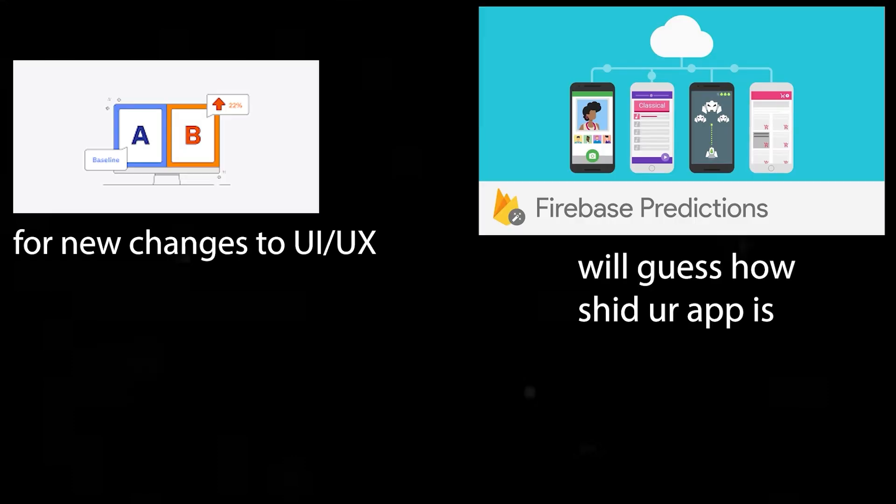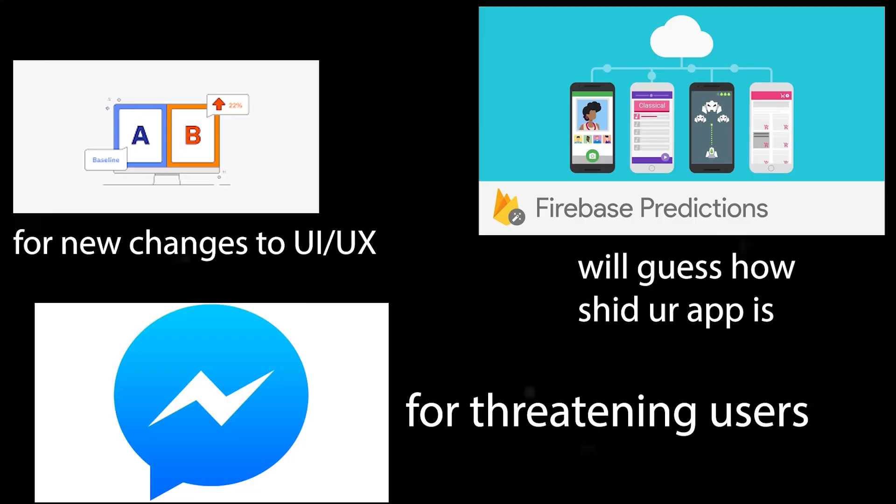Everything I've talked about so far is something that you use in your front-end and back-end that your users interface with. But Firebase also creates a great developer experience on top of this, and one of the ways they do this is with their analytics. Not only do they have A/B testing, Firebase predictions, and cloud messaging, but you can actually create your own metrics inside of your web app. These analytical features are great for small apps as they can look at metrics and analyze what they're doing right and wrong.